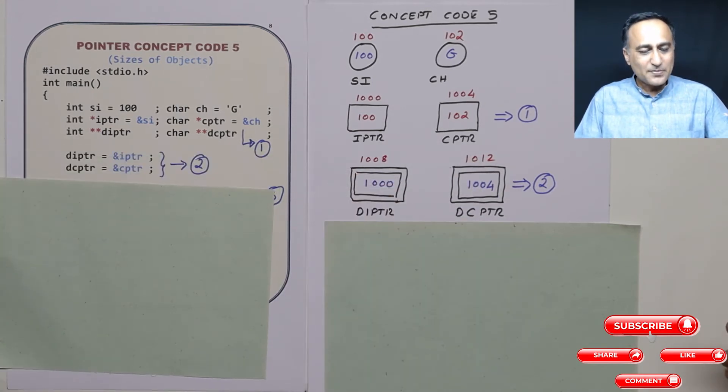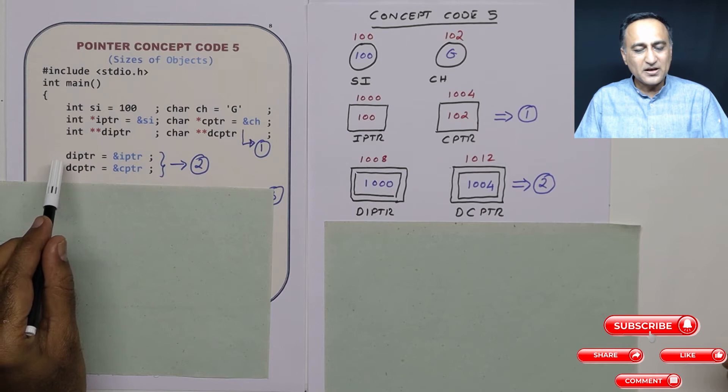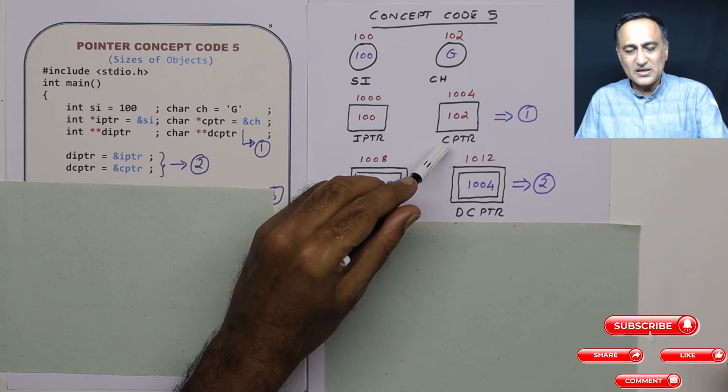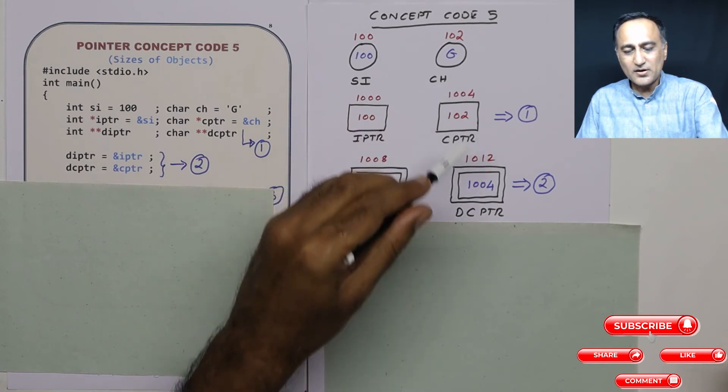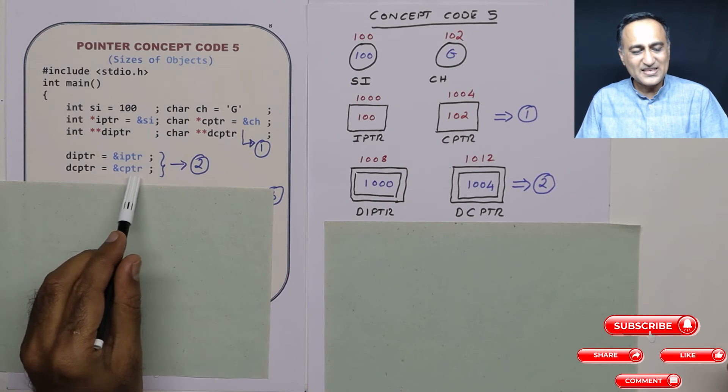Then in the next step what I am doing is in step number 2, I am giving the address of iptr to di ptr. So iptr is at address 1000, that 1000 comes here. cptr is at address 1004. So 1004 gets assigned to dc ptr as you can see here.